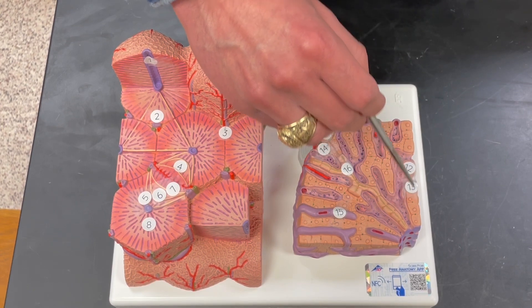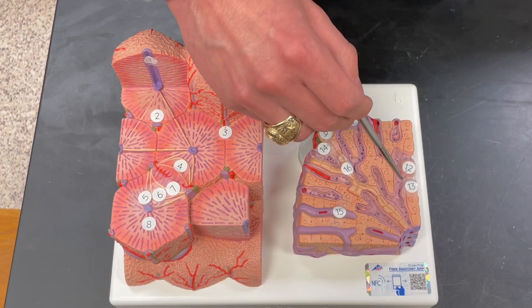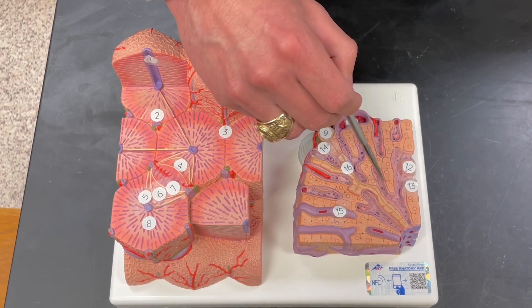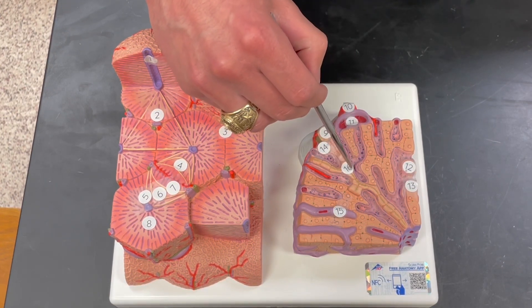Number 12, this is what's known as the Kupffer cells. These are the dendritic cells that are found within the liver.